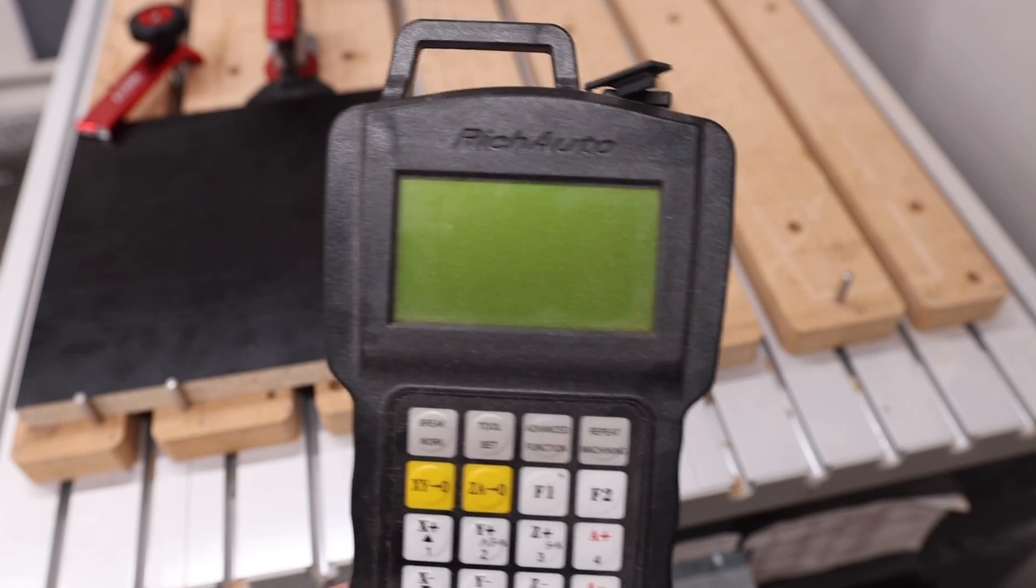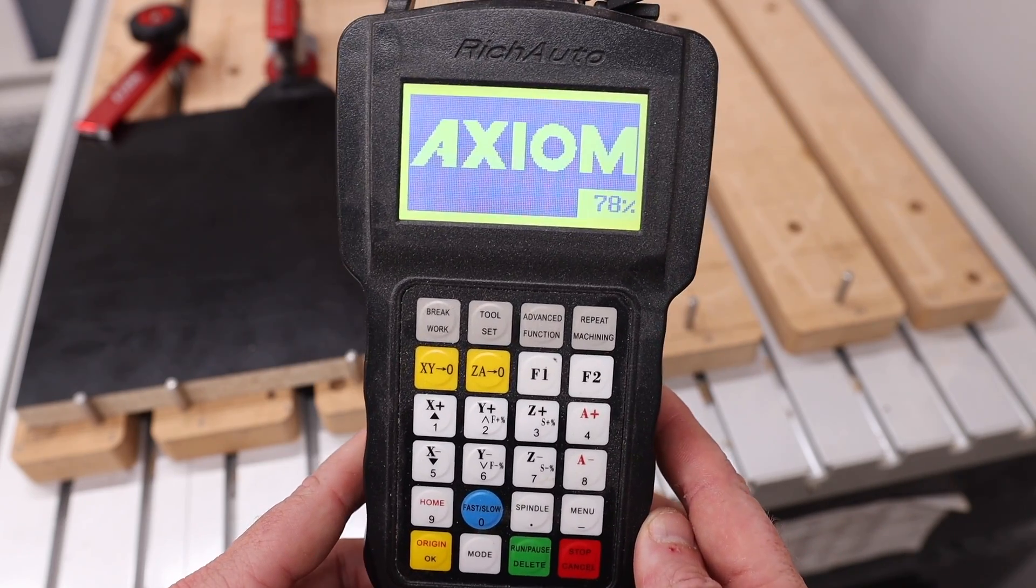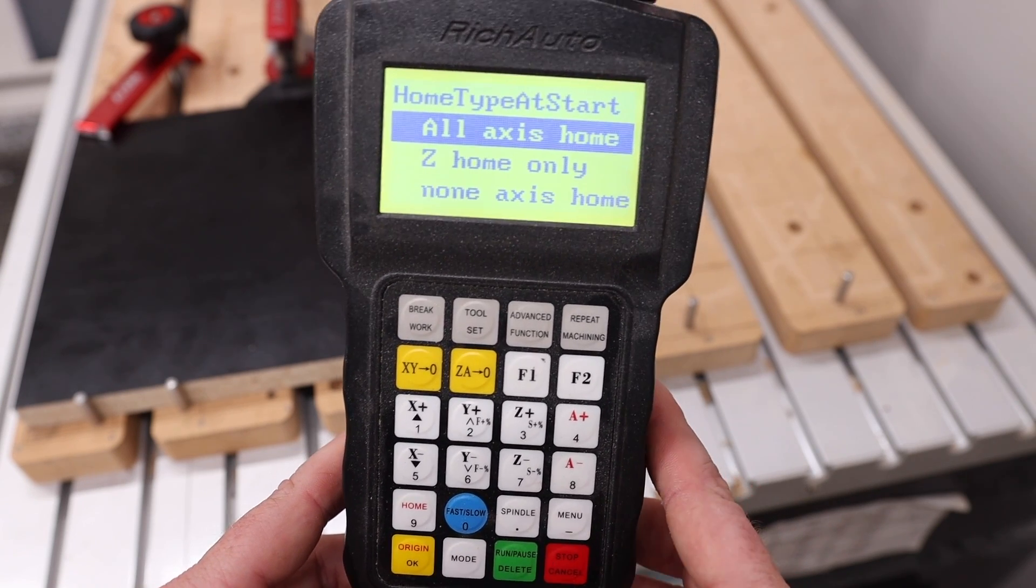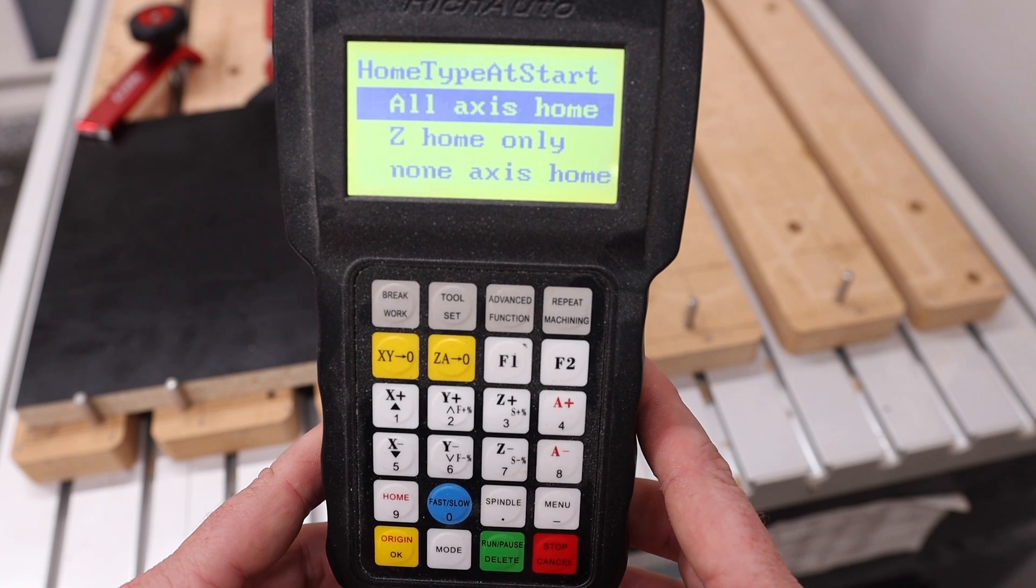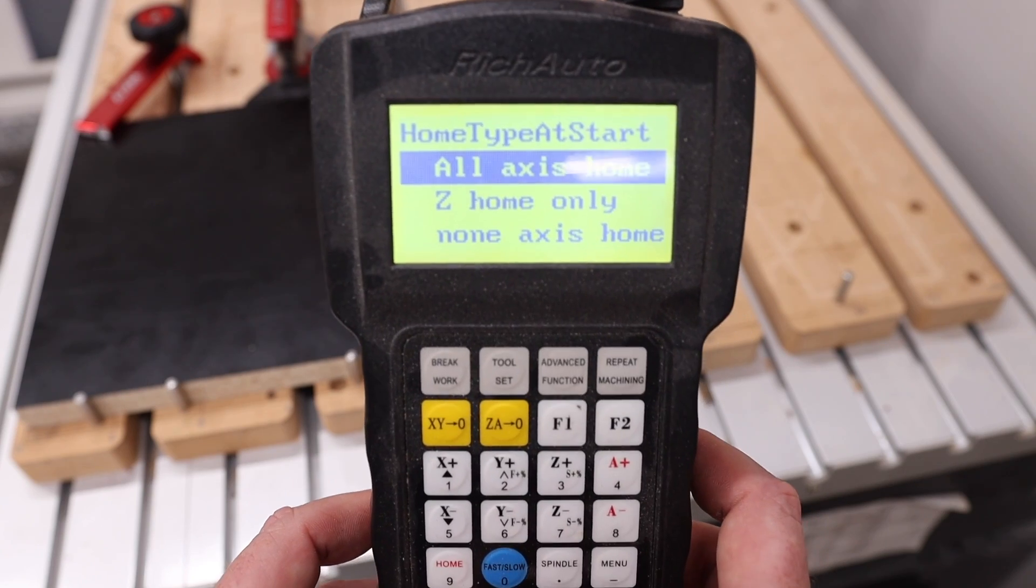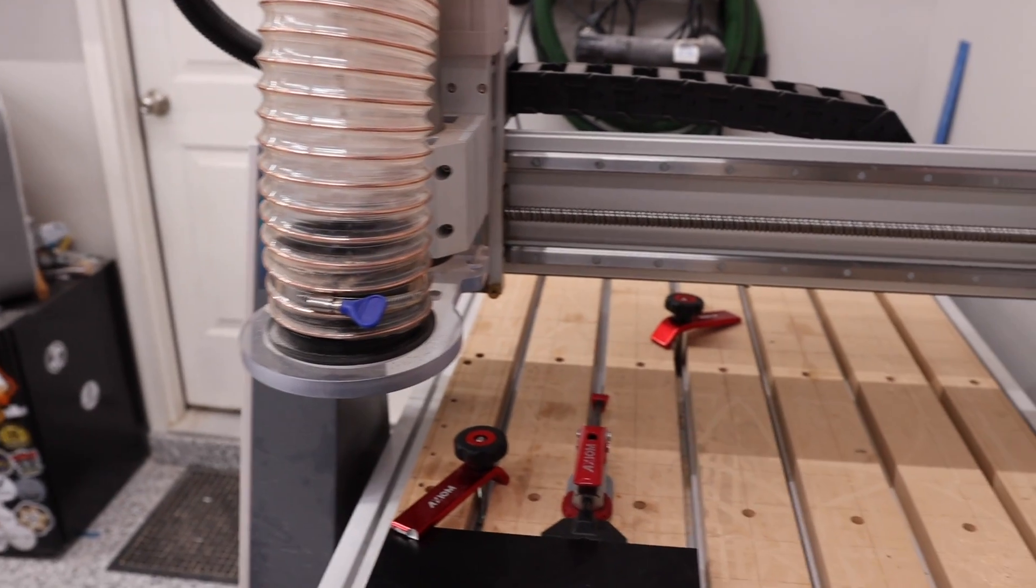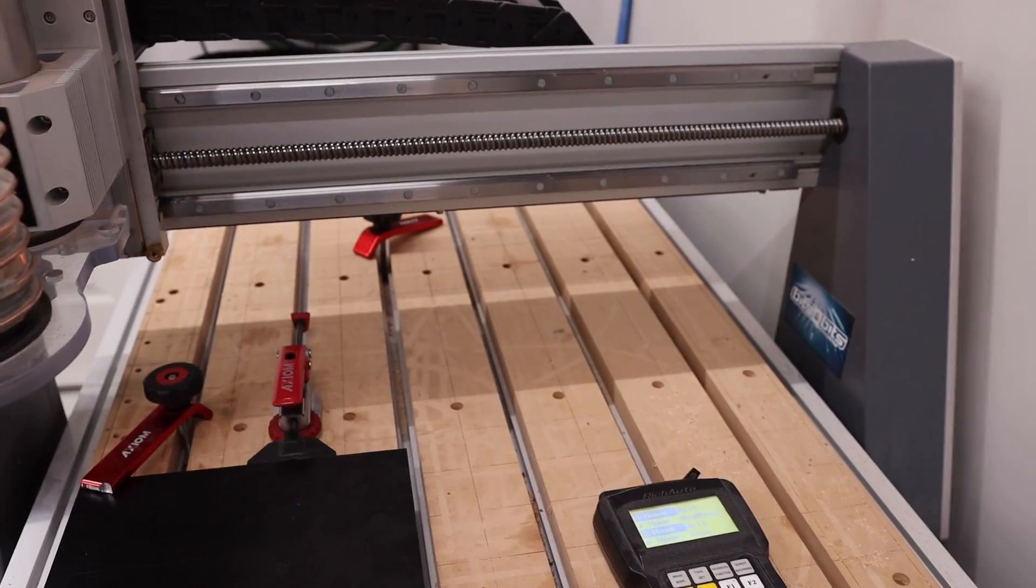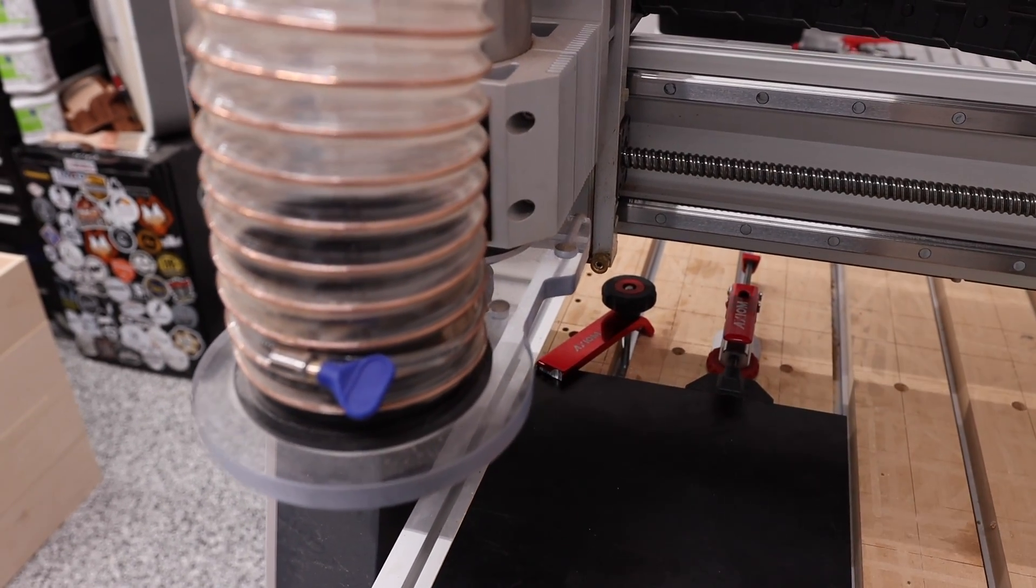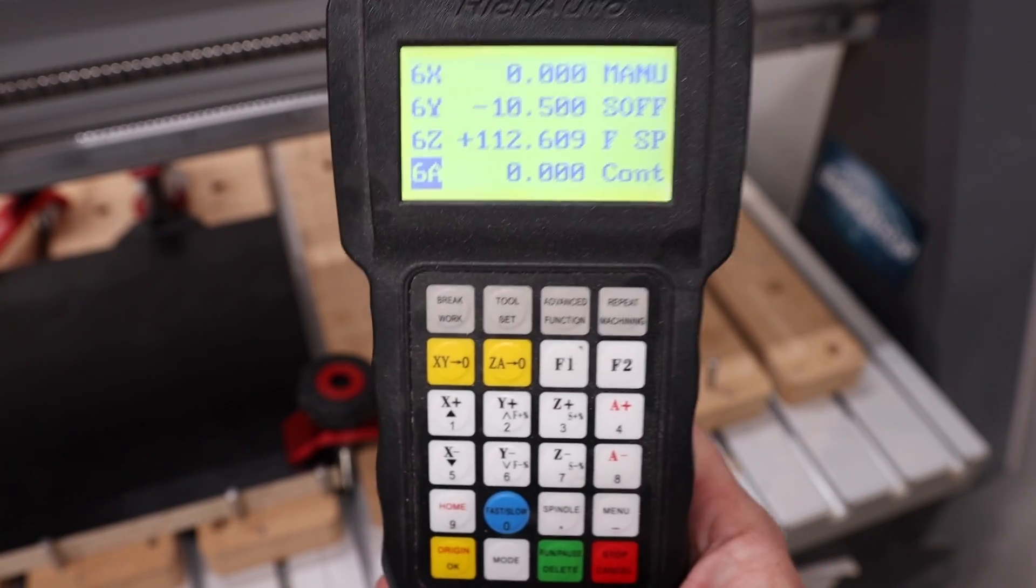The next thing we're going to do is turn on the machine. You might hear it in the background a little bit. As the machine's coming on, it's going to come up with this screen. The first thing that you're going to do when you turn it on is all axis home and you'll see right here, origin. That's your command. I'm going to let it move. And as you can see, it's coming all the way back down to the home position. It's at the home position.